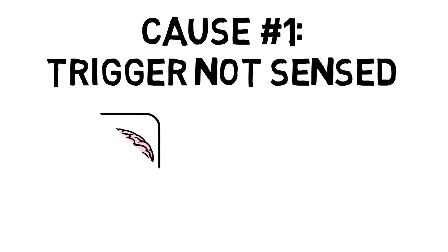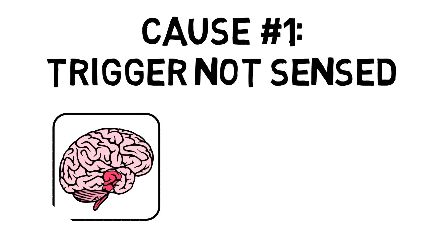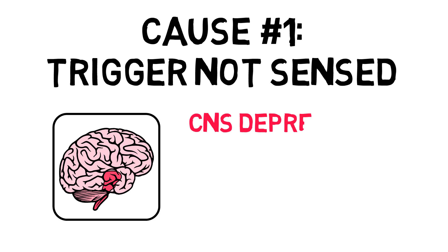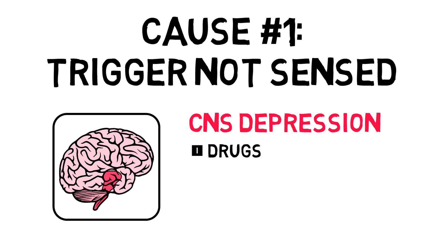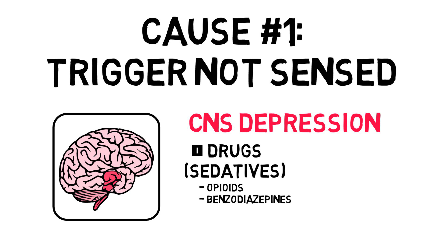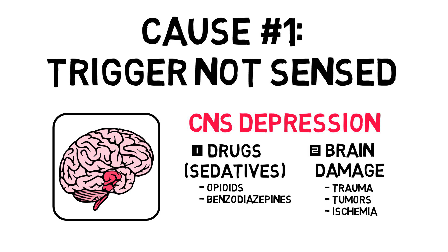Our respiratory center is located in the medulla oblongata and the pons of our brainstem. Chemoreceptors detect high CO2 and will trigger the body to increase respiratory rate. When the respiratory center is depressed, it won't function properly and CO2 levels will rise, resulting in respiratory acidosis. Common causes for CNS depression are drugs like opioids and benzodiazepines, as well as brain damage caused by trauma, tumors, or ischemia.